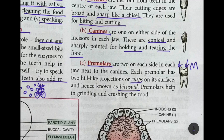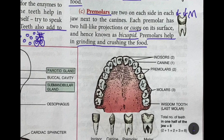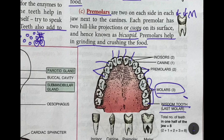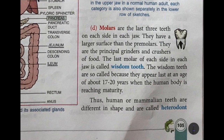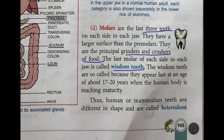The function of premolars is to help in grinding and crushing food. So in the jaw you have four incisors, then a canine, then two premolars on each side. Beyond the premolars there are three molars, and the last one is known as the wisdom tooth. Molars are the last three teeth on each side in each jaw and have a larger surface area than the premolars, so their main function is to grind and crush the food. The last molar is called the wisdom tooth because it does not appear at birth but comes out at about 17 to 20 years of age, when the human body is reaching maturity.